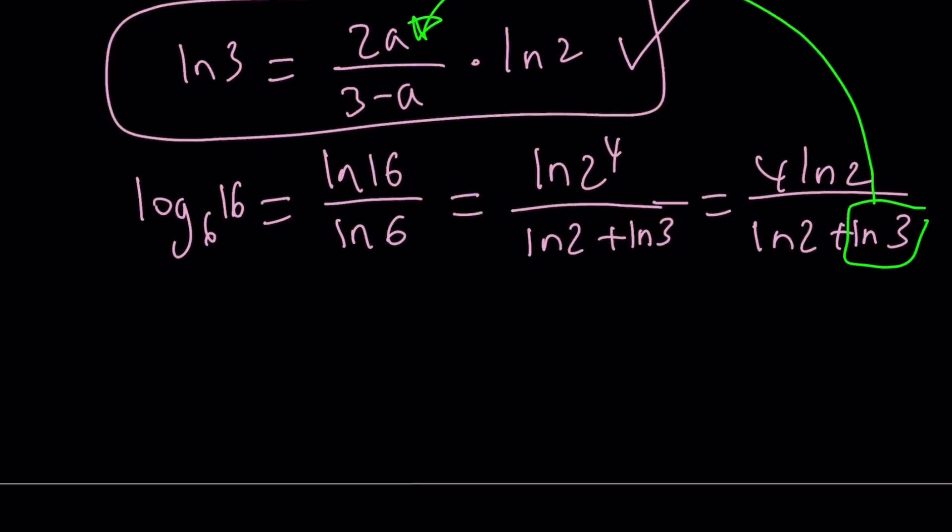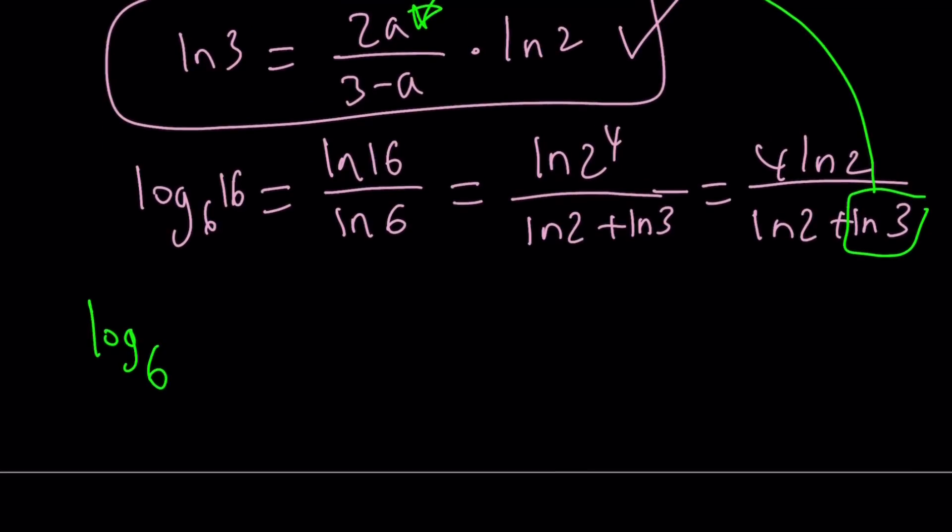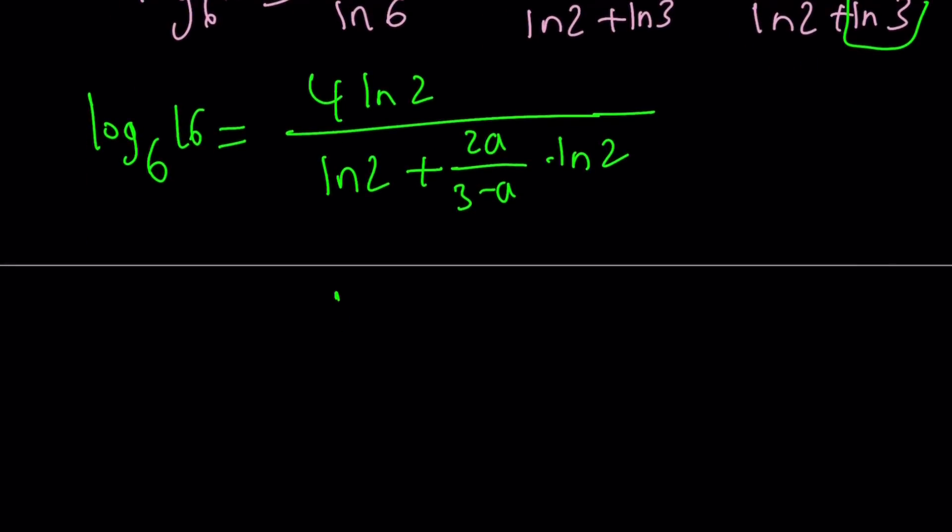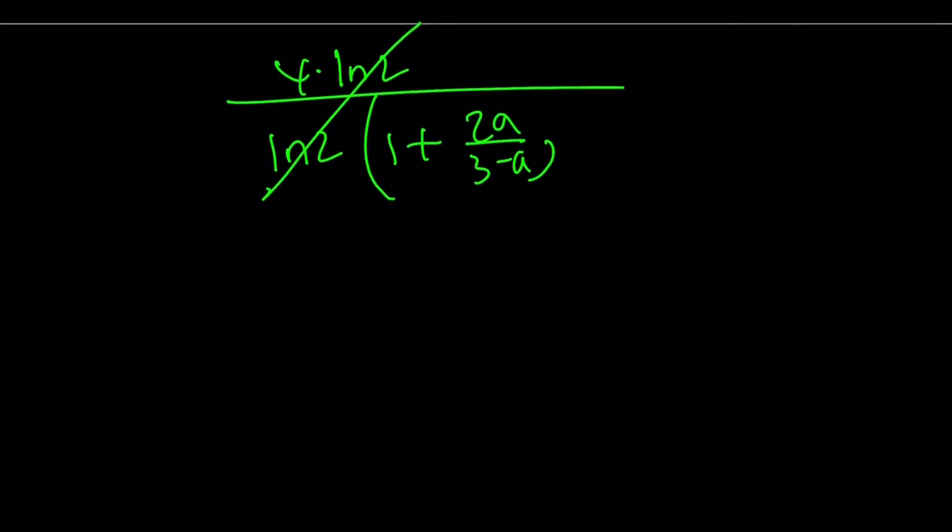Notice that we have an ln 3 here and I can replace that with this expression right here. Make sense? So my expression that I'm trying to evaluate can be written as 4 ln 2 divided by ln 2 plus ln 3, which can be written as 2A over 3 minus A times ln 2. And this is the critical part. You can take out ln 2 and factor. Take out ln 2. You're going to get 1 plus 2A over 3 minus A. This is what we're trying to evaluate.